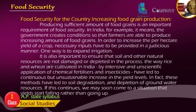It is important to ensure that soil and other natural resources are not damaged or depleted in the process. The way rice and wheat are cultivated in India through intensive and unscientific application of chemical fertilizers and insecticides has led to continuous but unsustainable increases in yield levels. These methods have led to soil degradation and depletion of groundwater resources. If this continues, yields may start falling rather than going up.